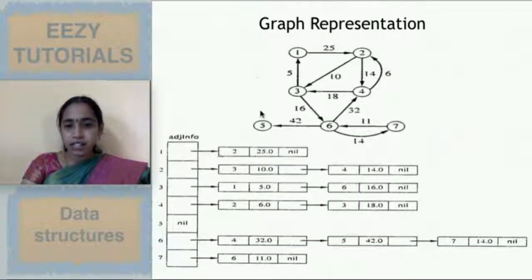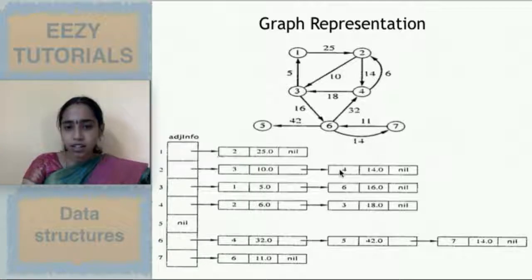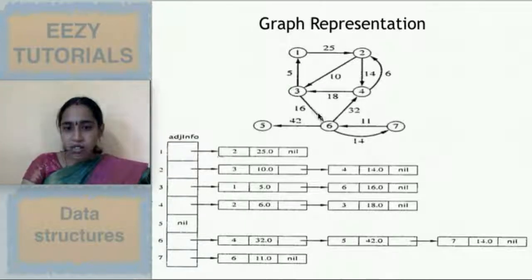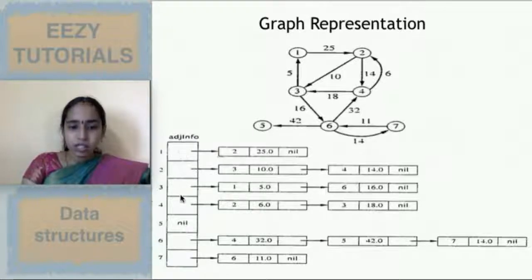For a weighted graph adjacency list, each node has three components: one for the neighbor, one for the weight, and one for the next address. For vertex 1 with outgoing edge to 2 at weight 25: 2 | 25 | null. For vertex 2 with outgoing edges to 3 (weight 10) and 4 (weight 14): 3 | 10 → 4 | 14 → null. For vertex 3 with edges to 1 (weight 5) and 6 (weight 16). If a vertex has no outgoing edge — like vertex 5 — you write null directly. Combining the array and list gives the adjacency list representation.